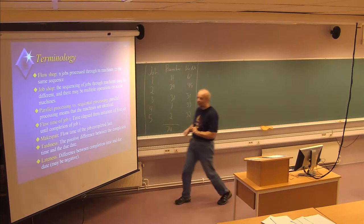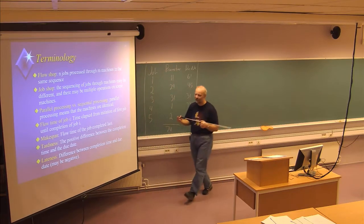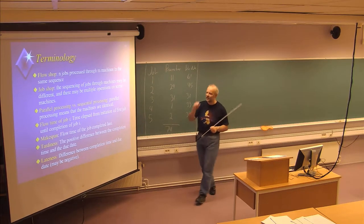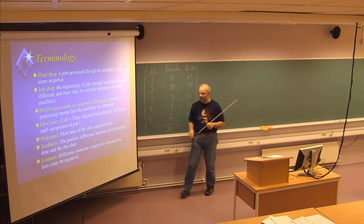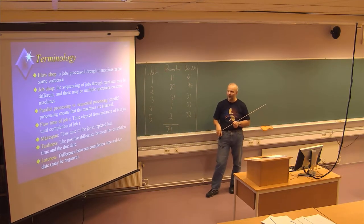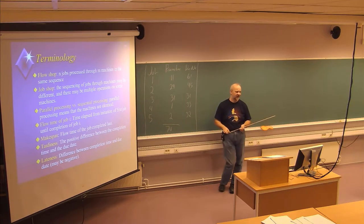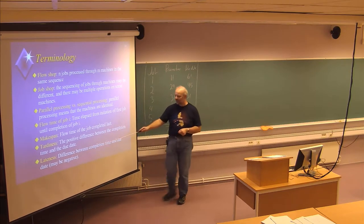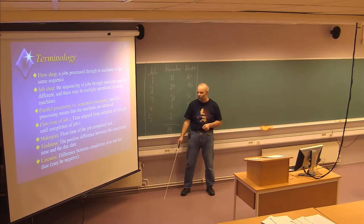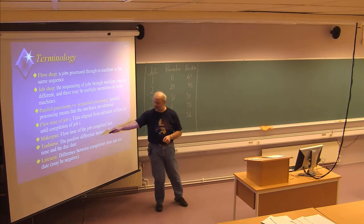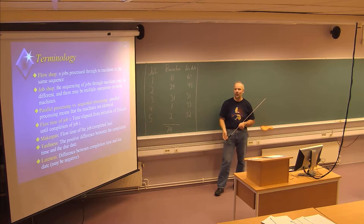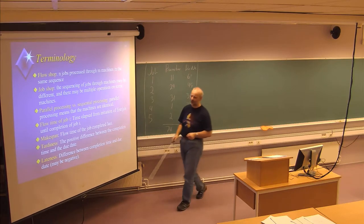We talk about tardiness, which is defined to be the positive difference between the completion time and the due date. If you have a delay, the tardiness describes the number of days of delay. But if the job is finished before the due date, the tardiness is defined to be zero. Lateness also describes the difference between completion time and due date, but lateness can also be negative — so if a job is finished before the due date, it might have a lateness of minus two, but the tardiness will still be zero.